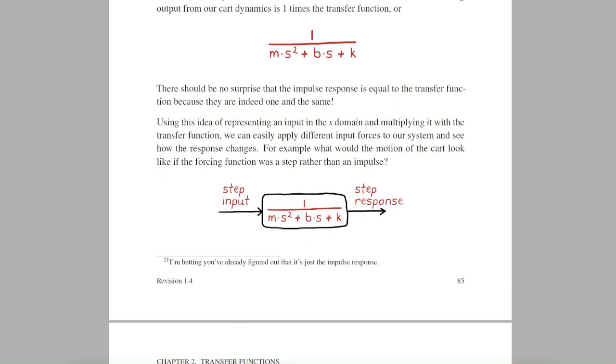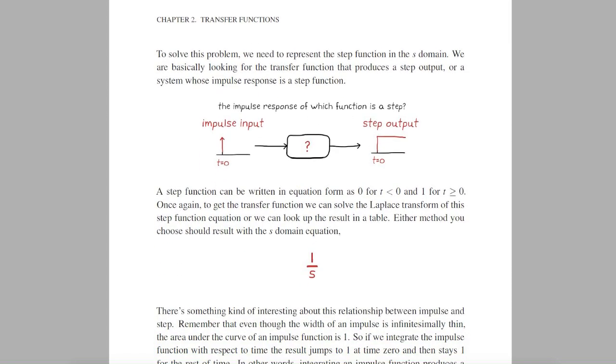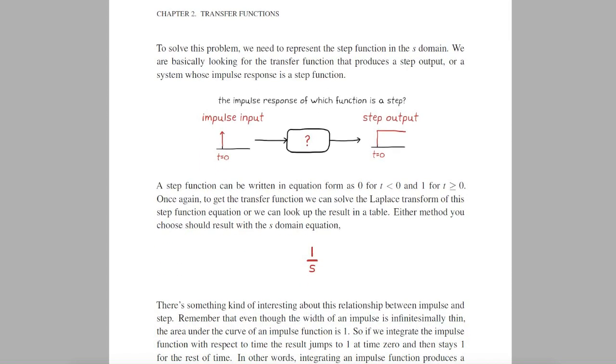But what if we wanted to know the step response of our system? First we need to represent the step function in the S domain. Basically we need a system whose impulse response is a step function, which we can solve for or again just look it up in a table. And you'll find it to be 1 over S.